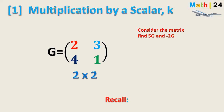Let's take for example that we have been asked to look for 5G and to look for minus 2G. 5G means multiplying the matrix G by a scalar quantity with a numerical value of 5, and minus 2G means multiplying this same matrix by the number minus 2. Both 5 and minus 2 are scalars — they are elements of the set of real numbers.